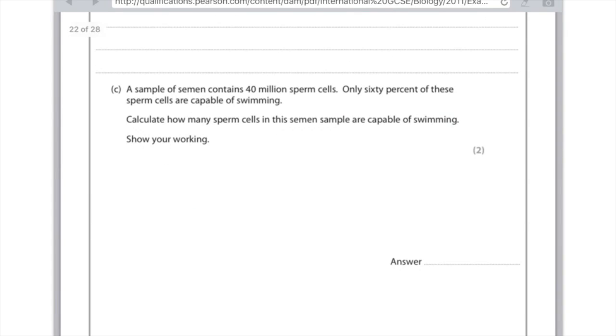A sample of semen contains 40 million sperm cells. That's a crazy number. Only 60% of these sperm cells are capable of swimming. Calculate how many sperm cells in this semen sample are capable of swimming. Show your working. So you're working out 60%. So that's 60 divided by 100 as it's a percent. Times it by 40 million. Which I'm actually just going to write as words because I think it's easier like that. If you type that into your calculator you'll get an answer which is 24 million. Or you could write it out in numbers.